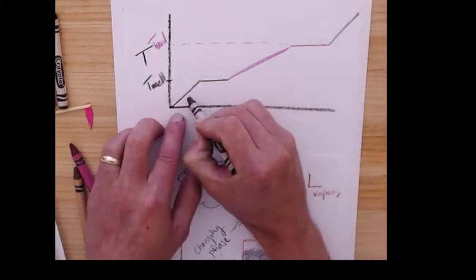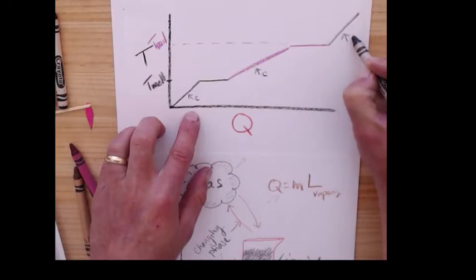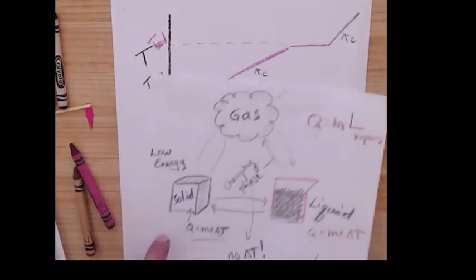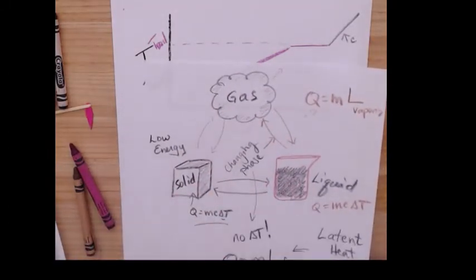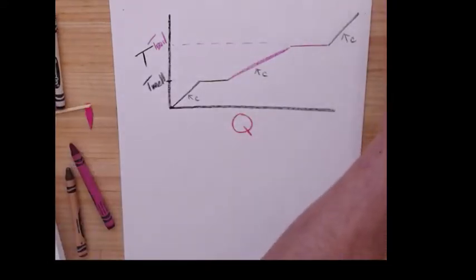And then it heats up again. The slopes of these are the C's and you'll notice that they're not the same. The specific heat of a solid is not necessarily a specific heat of a liquid. Let's do a quick problem here.